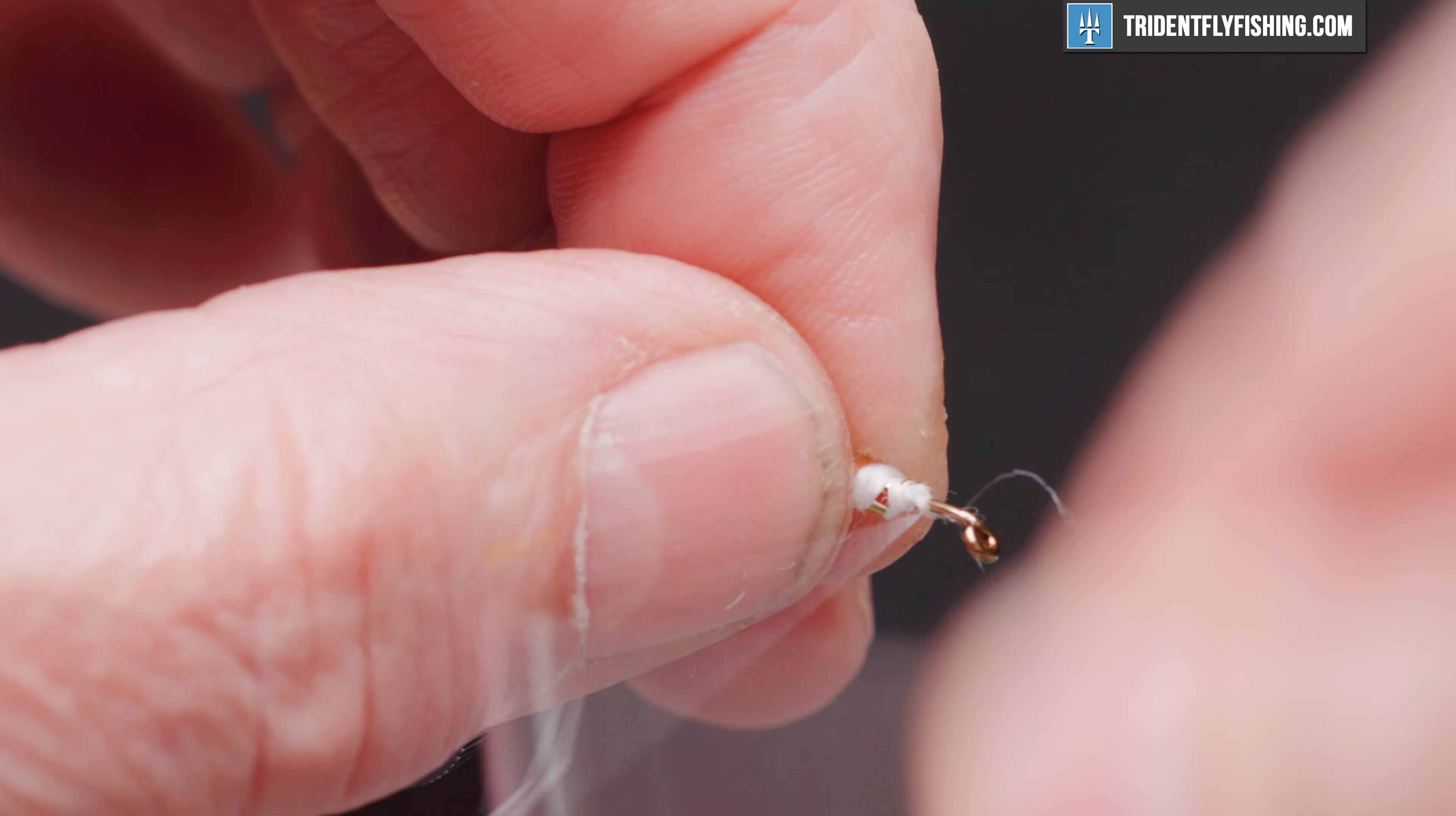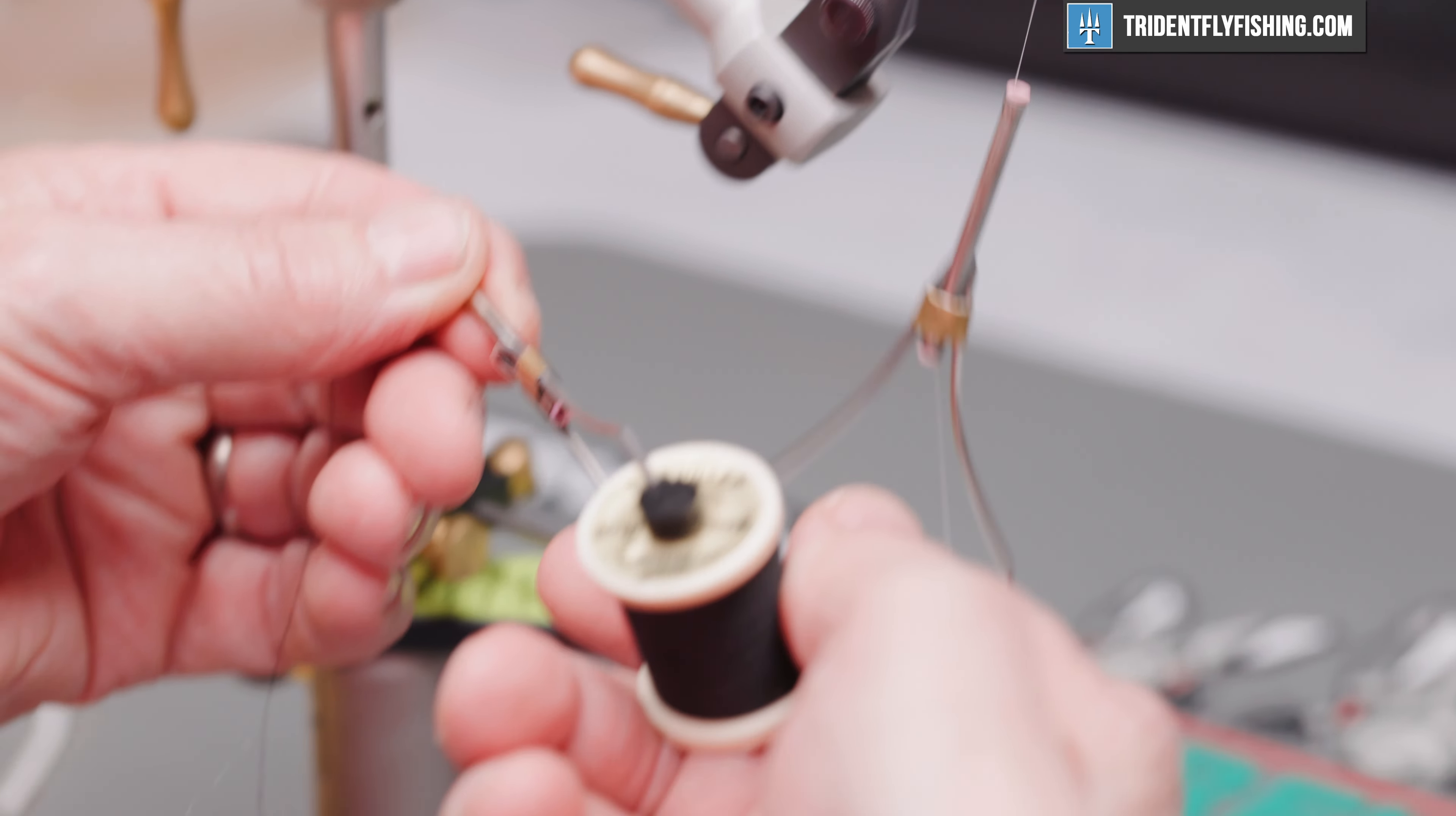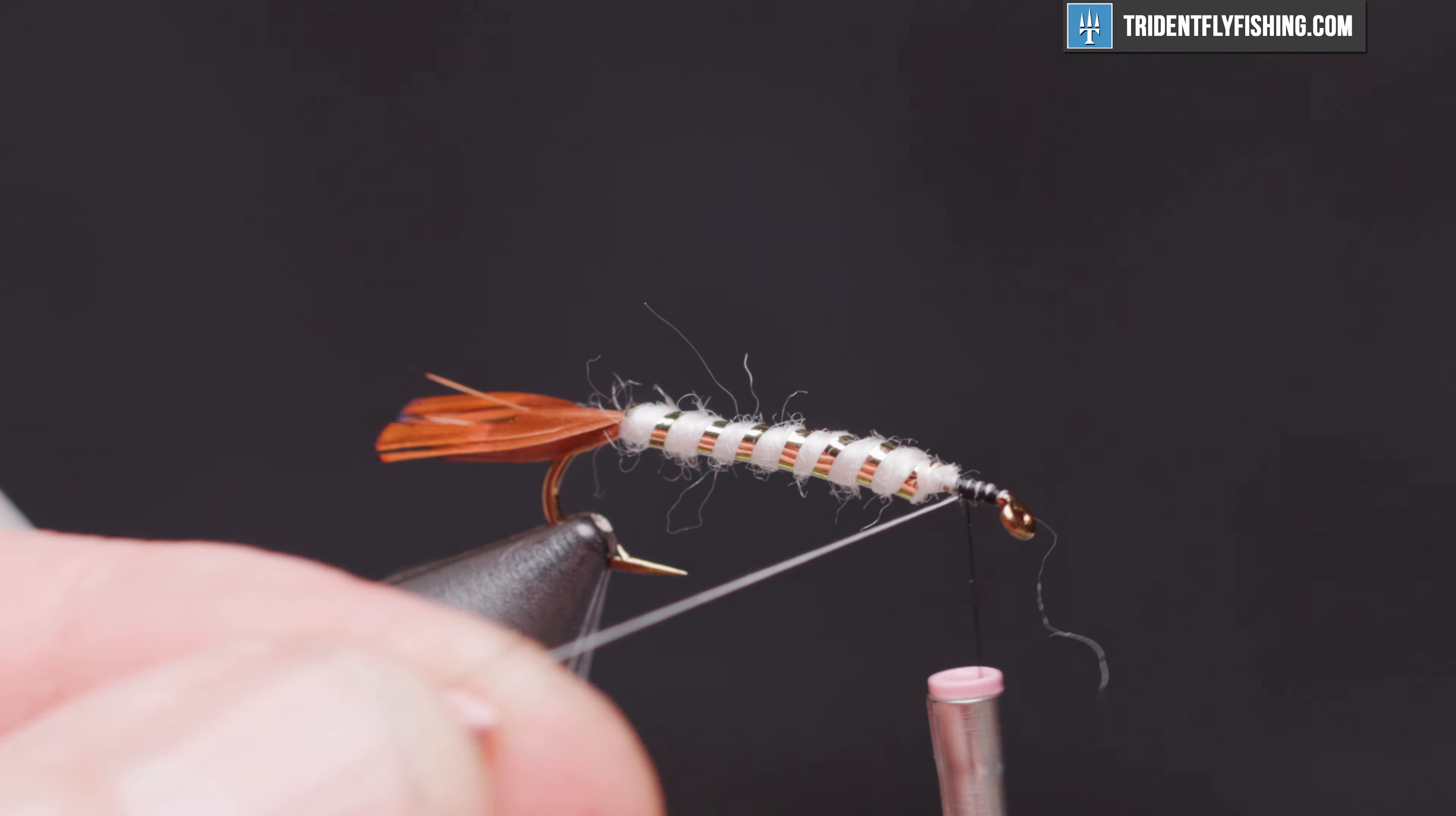Now the rib. And get rid of our excess there. At this point, we're going to change over to black thread. We want the head of this fly to be black. We are going to tie in some Danville's 6-0 in black.